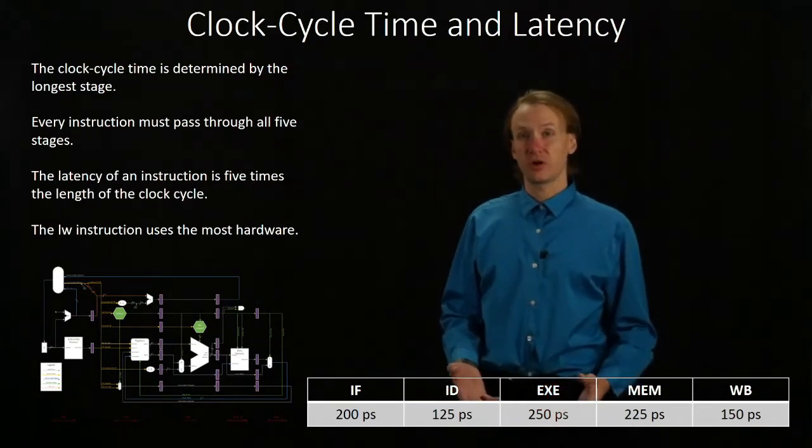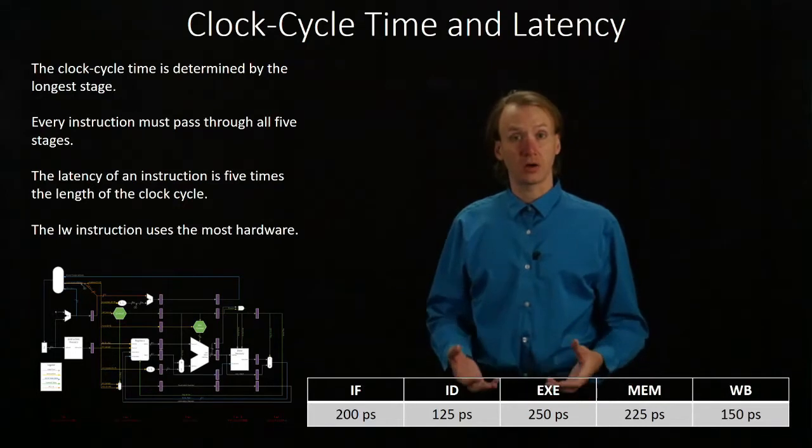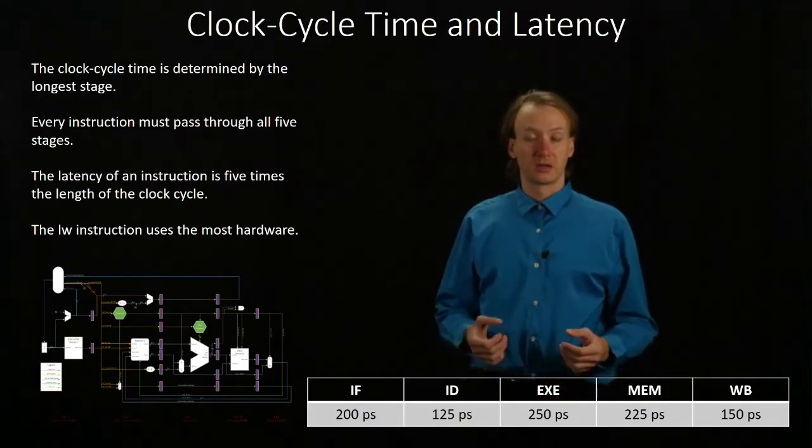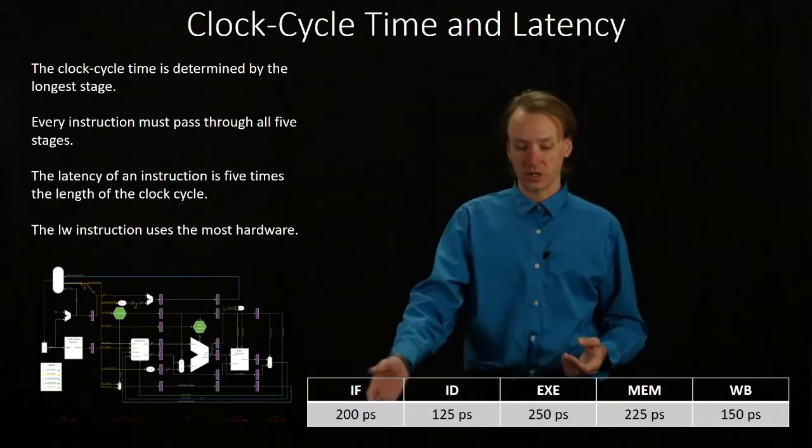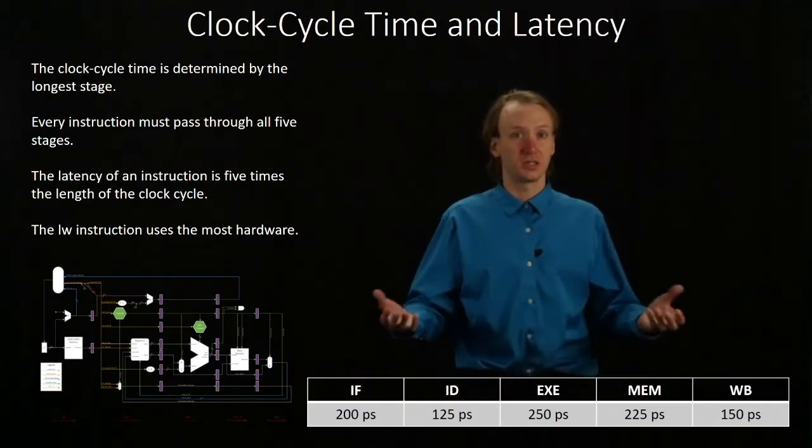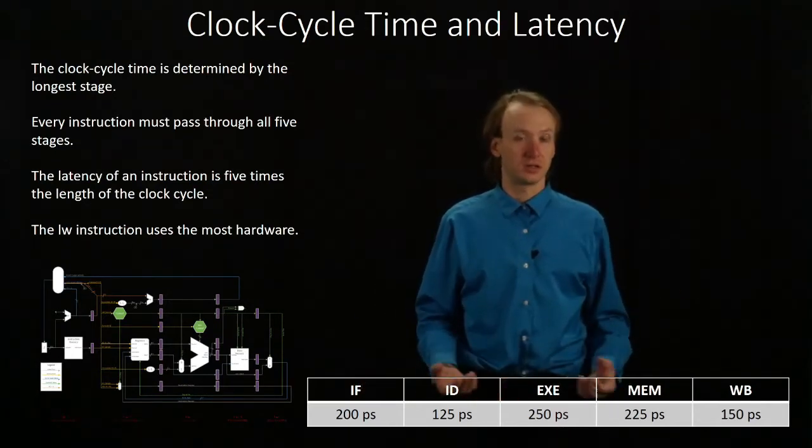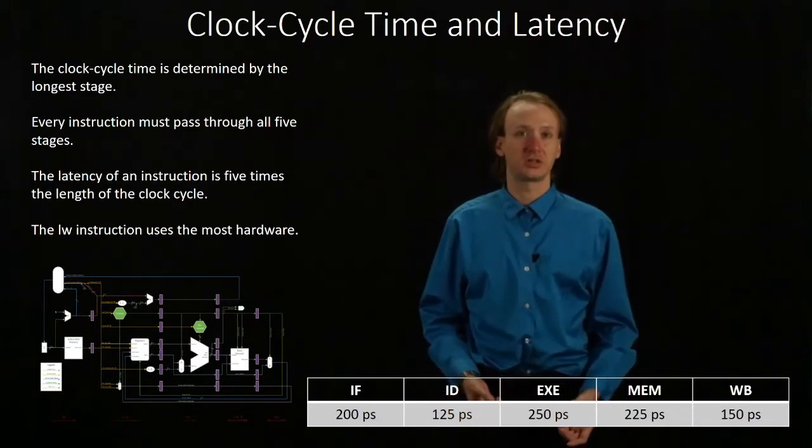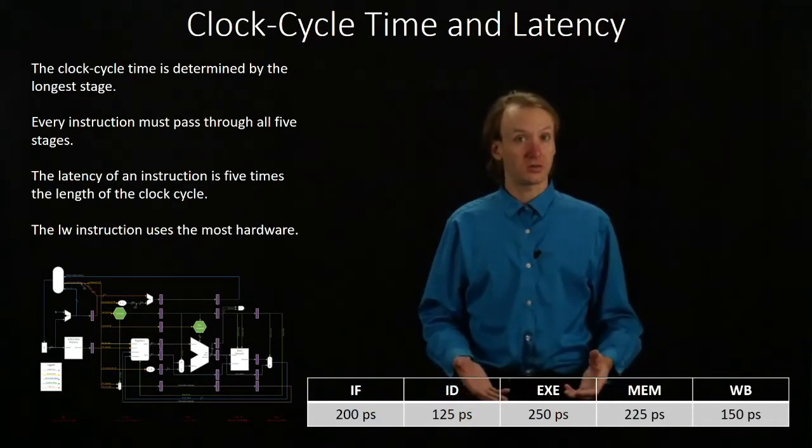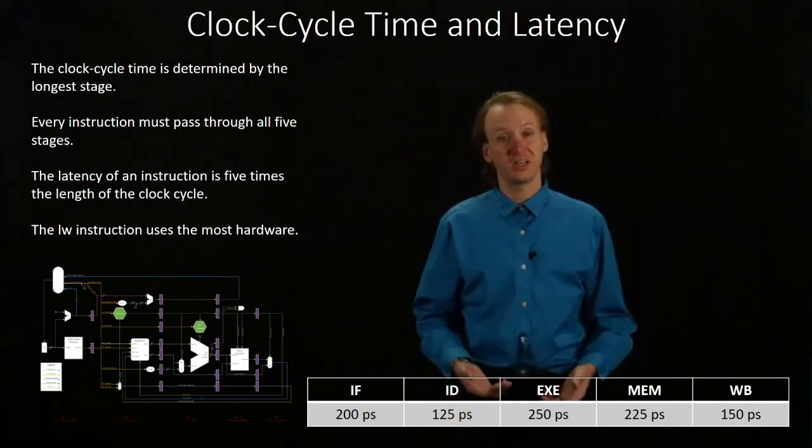So the first thing we probably want to do is find out how long our clock cycles are. To get the clock cycle time, we really just need to look at all five of our stages and see which one is the largest. In this case, that's the execute stage. So our clock cycle time can be 250 picoseconds.